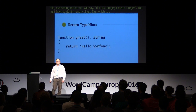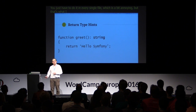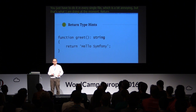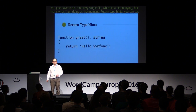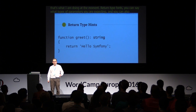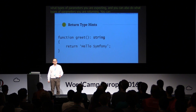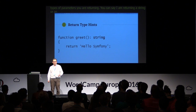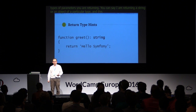Return type hints: just as you can say on a parameter what types of parameters you're expecting, you can also declare what types you're returning. So you can say I'm returning a string or an object of a particular type. And this works with the strict types declaration and the scalar types as well.